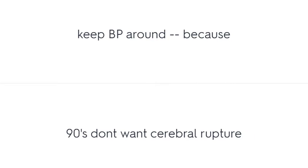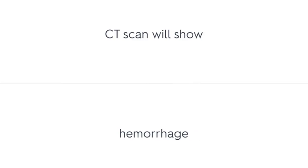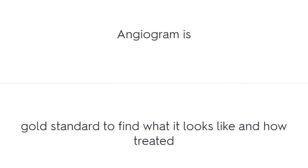Keep BP low because you do not want cerebral rupture. Diagnosis of AVM uses CT scan, MRI, and angiogram. CT scan will show hemorrhage. MRI will show the AVM as a grossly entangled mass. Angiogram is the gold standard to define what it looks like and how it should be treated.